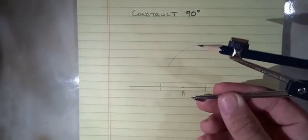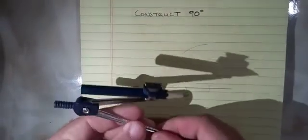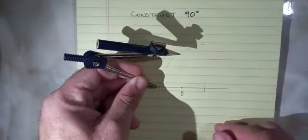Now without changing the radius of the compass we will do the same thing on the other side.